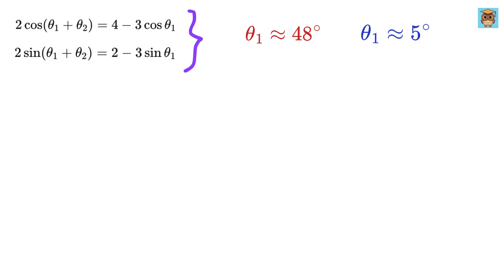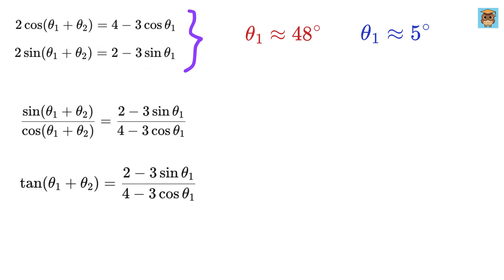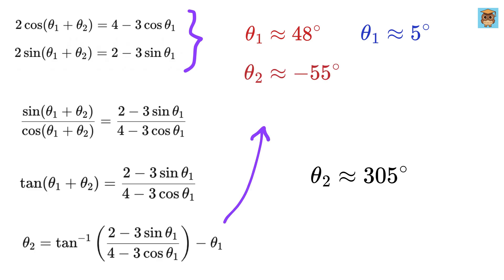Now using these two equations, we can find theta 2. Divide both of them like this to get tan theta 1 plus theta 2 equals this. So, theta 2 equals tan inverse of this minus theta 1. Finally, we get theta 2 equals 305 degrees, which is also equal to 305 minus 360, or around minus 55 degrees in clockwise direction, for theta 1 equals 48 degrees.